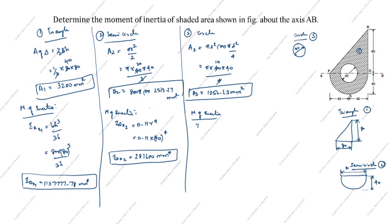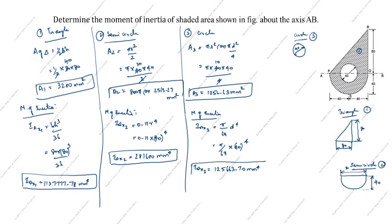The moment of inertia of the circle about its centroidal axis is IAX3 = πd⁴/64. With d = 40: IAX3 = π × 40⁴ / 64 = 125663.70 mm⁴. This is the centroidal moment of inertia of the circle.